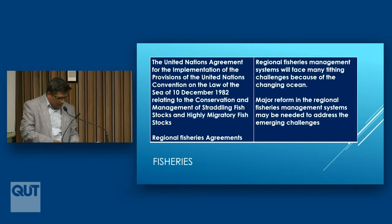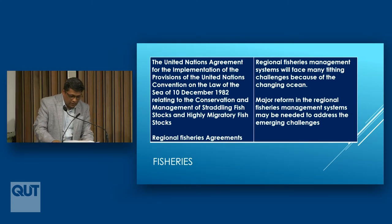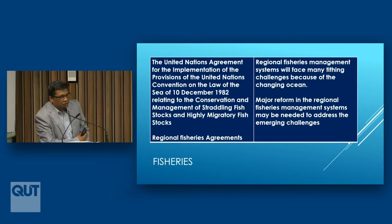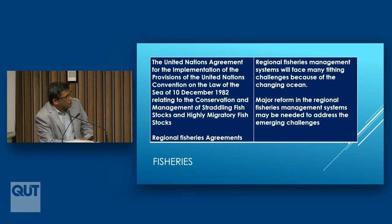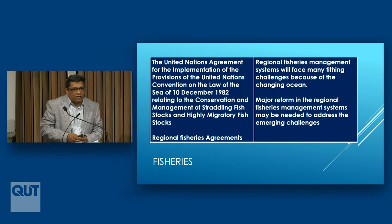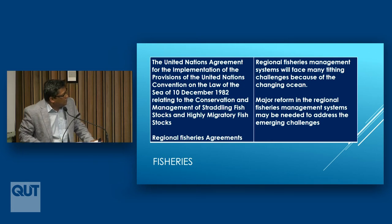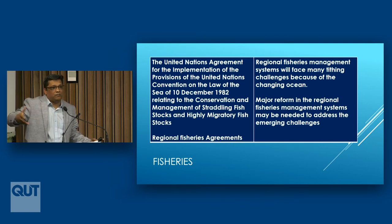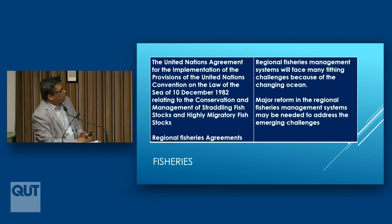On fisheries, we have the Fish Stocks Agreement, and under that there are many regional fisheries agreements in different regions of the world — some specialized on certain species, some general fisheries agreements. Research suggests that the way these fisheries management organizations currently work at the regional level will face lots of challenges in the future because of ocean acidification and other impacts on the changing ocean, and they also need to consider these changes.